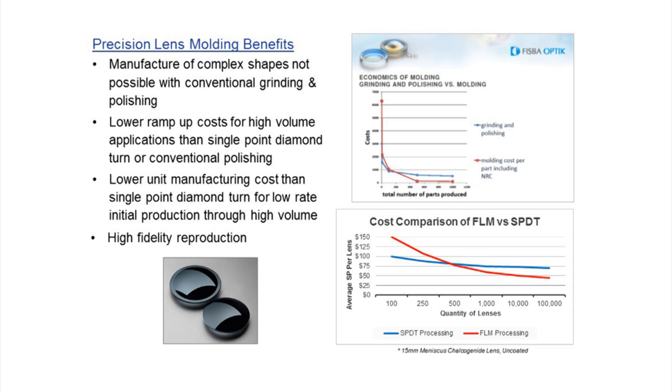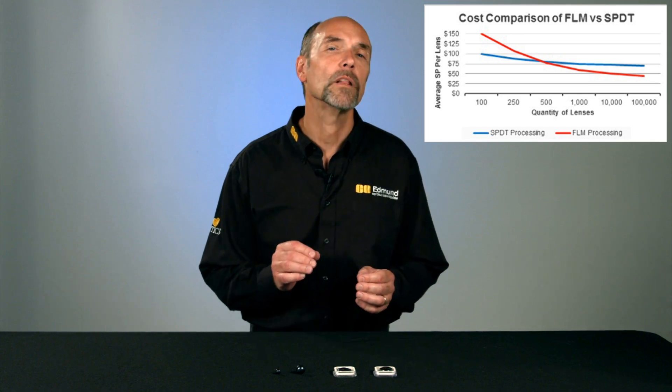So why do molding? Molding allows us to create features not available through traditional grinding and polishing. Some of these features are available through diamond turning, but not in mass production as with molding. The chart on the lower right looks at the cost comparison between those two, and you can see that with just a 15 millimeter diameter lens, with only a few hundred cycles, molding is cheaper than diamond turning. So if your order was say 500 to 600 pieces, it would be more economical to do molding than diamond turning.